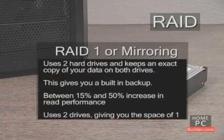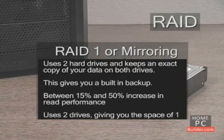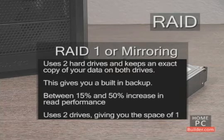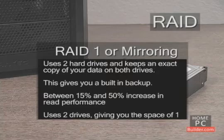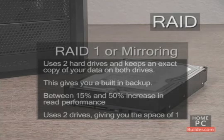RAID 1, sometimes referred to as mirroring, uses two hard drives and keeps the same data on both. This gives you a built-in backup at all times and a 15% to 50% performance increase in reading data. The downside is that you're using two hard drives and only getting the space of one — so if you have two 750 GB drives, you're only getting 750 GB of usable space.